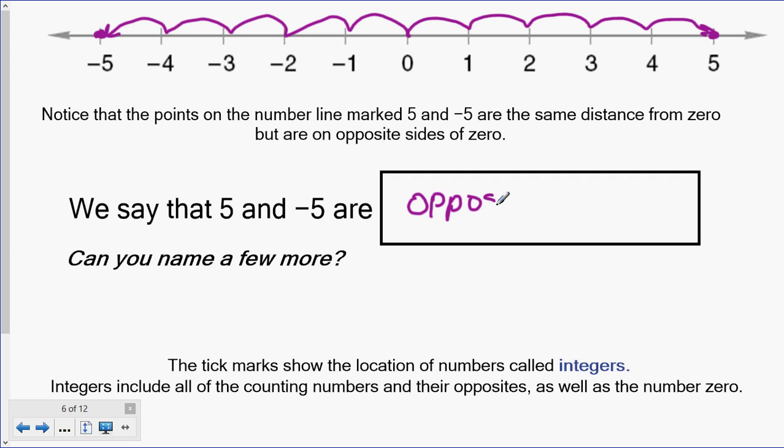So that should make sense, being that they're on opposite sides of zero. Can you name a few more pairs of opposites? So I'd like you to try in your notes right now to name at least one more pair of opposites. I'm going to say 25 and negative 25. Come up with another pair or two in your notes of opposites. Now underneath that, it says that the tick marks on the number line show the location of numbers called integers. So not integers, but integers is how you say that.